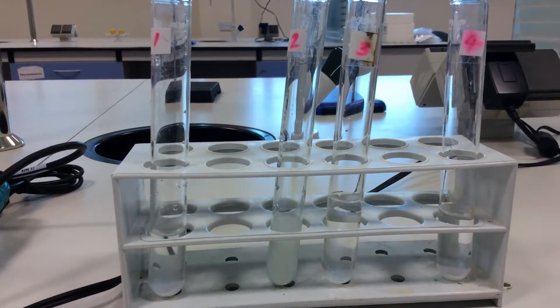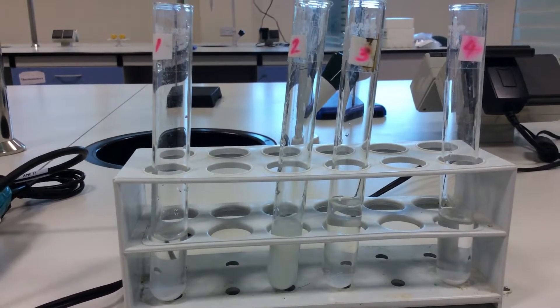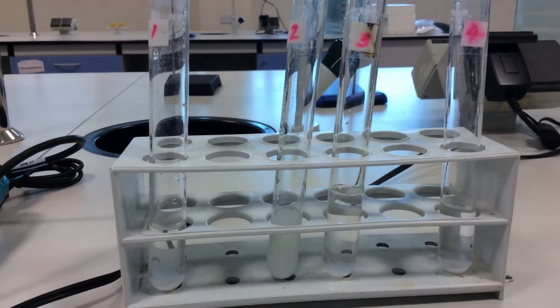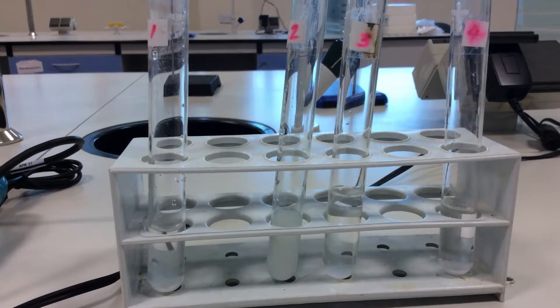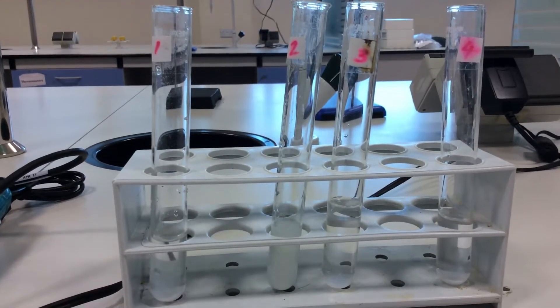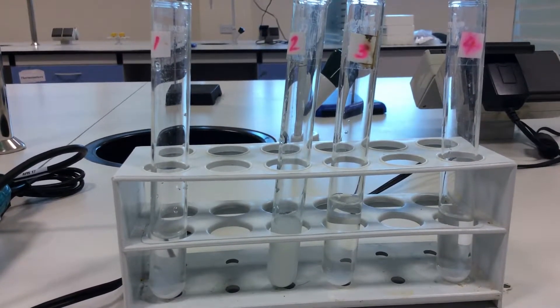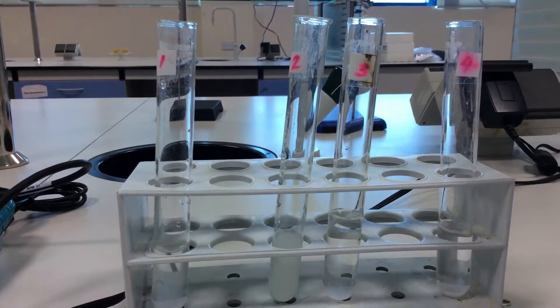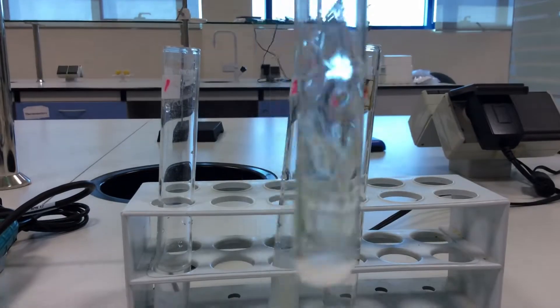To state whether each compound is soluble or not, I repeat: the first test tube contains sodium chloride, the second test tube contains starch, number three contains magnesium sulfate, and number four contains glucose.